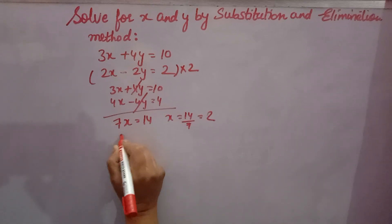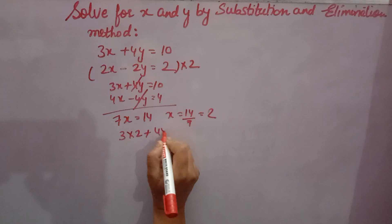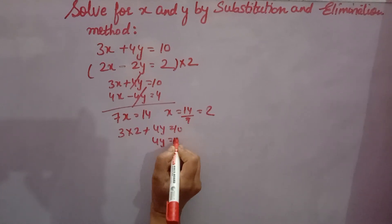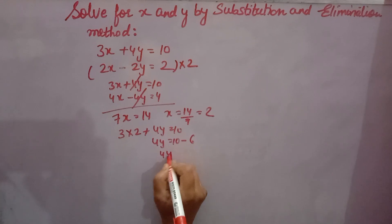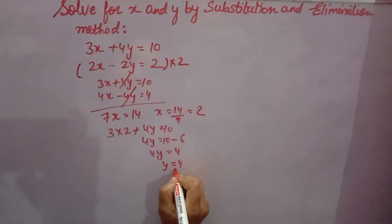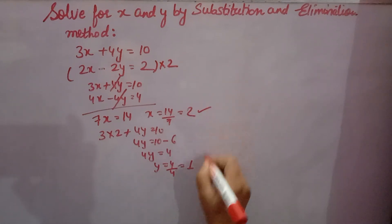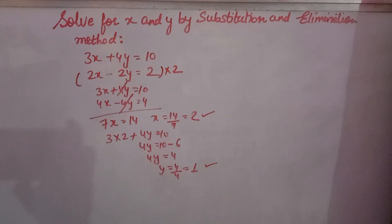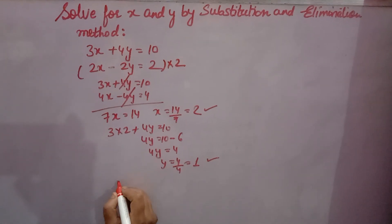So x equals 14 over 7, which is 2. Now substitute x equals 2 into the first equation: 3 times 2 plus 4y equals 10, so 4y equals 10 minus 6, which is 4. Therefore y equals 4 over 4, which is 1. So x equals 2 and y equals 1. That completes the elimination method.